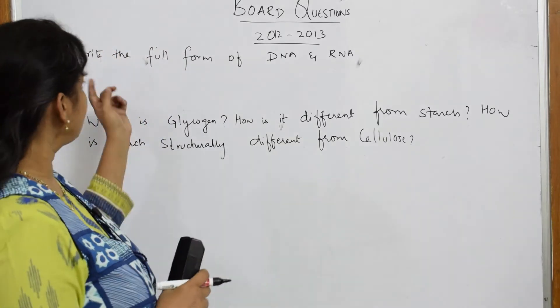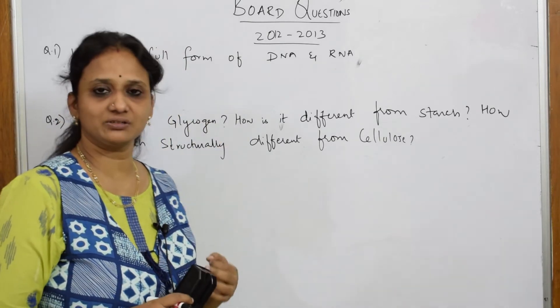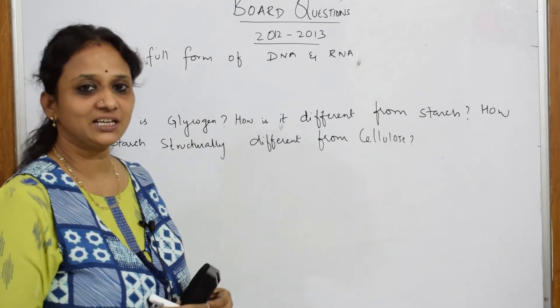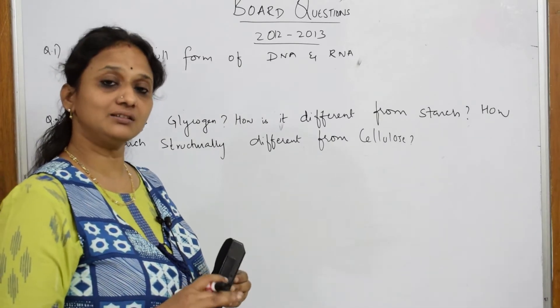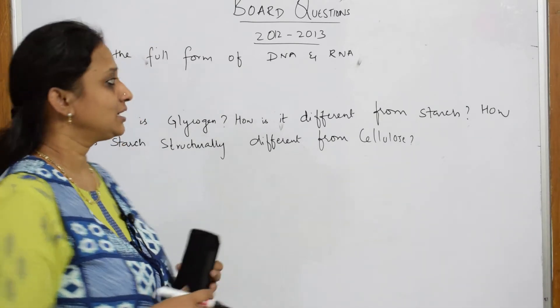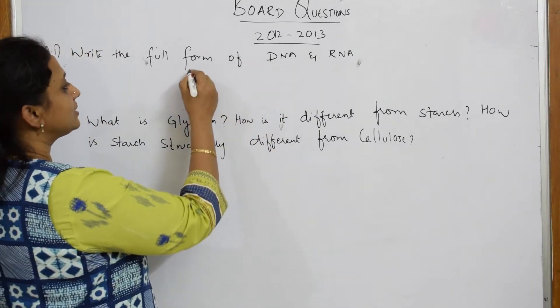They have given us: write the full form of DNA and RNA. It is a basic question — the simplest question in chemistry. They want you to write only the full form, not the structure, nothing. Just write DNA and RNA.